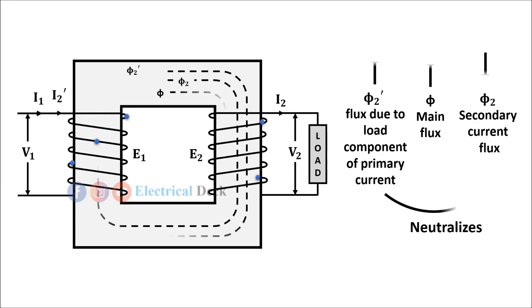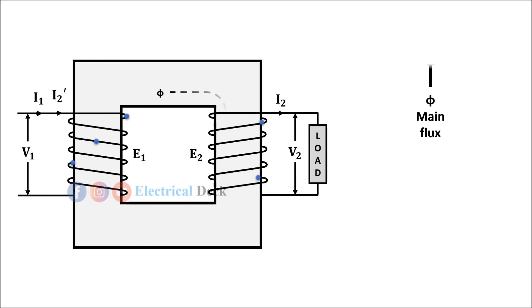The MMF, that is ampere turns N₁I₂', balances the ampere turns N₂I₂. Hence the net flux in the core is again maintained at constant level. Thus for any load condition, no load to full load, the flux in the core is practically constant.